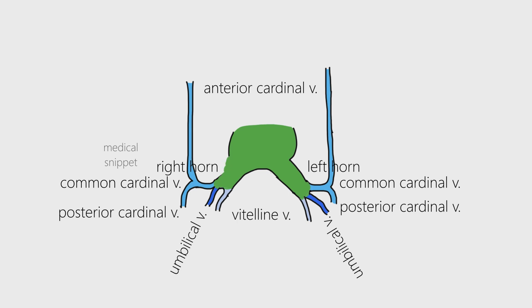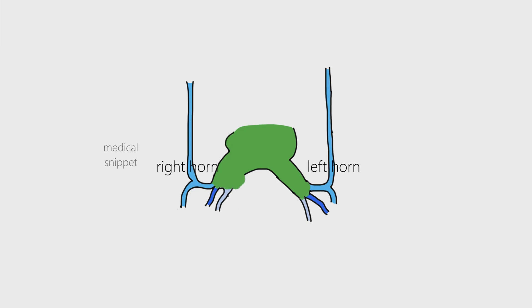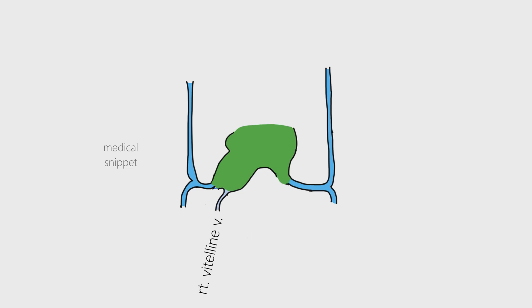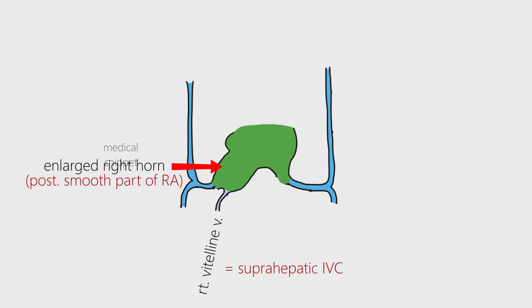In the course of time, the right horn enlarges and the left horn regresses. The right umbilical vein and part of the left umbilical vein near the sinus venosus regresses. The left vitelline vein also regresses. The right vitelline vein persists to form the suprahepatic portion of the inferior vena cava. The enlarged right horn forms the posterior smooth part of the right atrium.